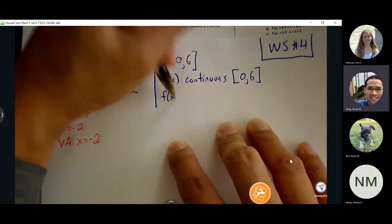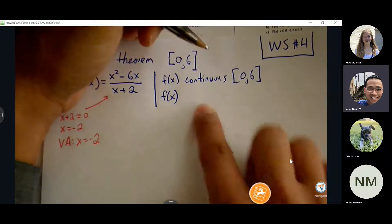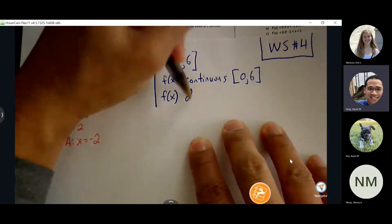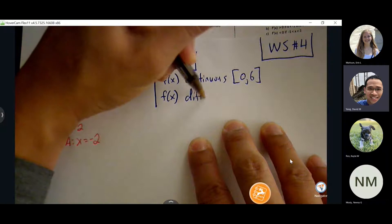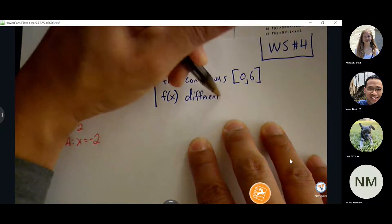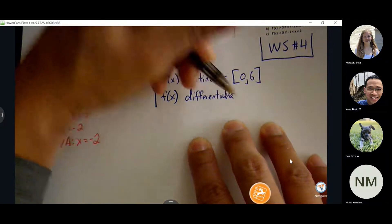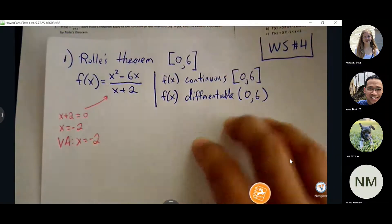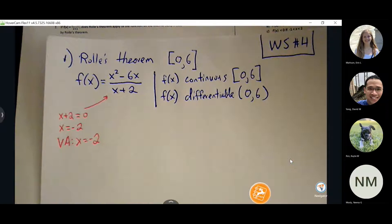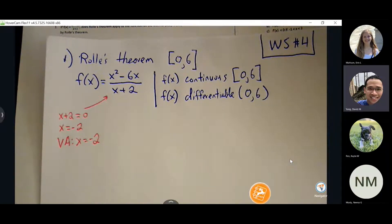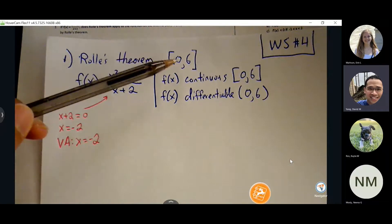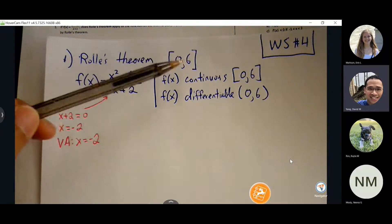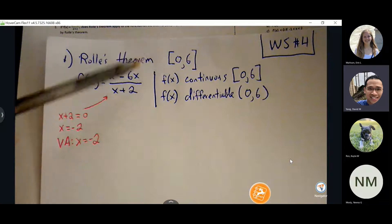Continuity is written with brackets, and differentiability is with parentheses. There's one more condition required, and that comes from the endpoints. Whether it's Rolle's theorem or mean value theorem, we're always going to take the time to find the ordered pairs at the endpoints.